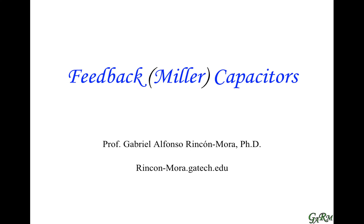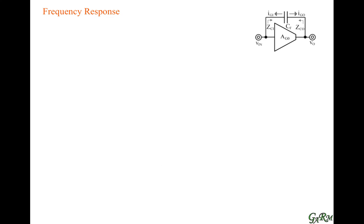This video is on feedback capacitors. We want to look at the effects of a capacitor connected across an amplifier. The voltage gain across the amplifier is a gain translation from the input voltage to the output voltage. We're modeling the amplifier as a transconductor that has an equivalent low-frequency transconductance and an equivalent output resistance.